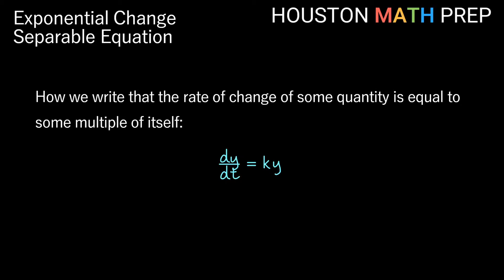How we write that the rate of change of some quantity is equal to some multiple of itself, which is exponential change. So we can write this as dy/dt equals k times y. Now dy/dt is just the change in y with respect to time, the instantaneous rate of change in y at any point in time equal to ky. k is just some constant multiple of y. So we have the change in y with respect to time is going to equal some multiple of y here.